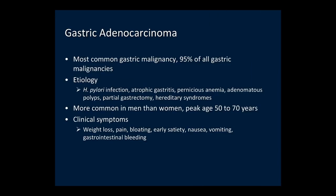Adenocarcinoma is the most common gastric malignancy, representing 95% of all gastric malignancies. The main etiology is thought to be chronic H. pylori infection. Patients with atrophic gastritis, pernicious anemia, adenomatous polyps, partial gastrectomy, and hereditary syndromes have an increased incidence. They are more common in men than women with a peak age between 50 and 70 years. Patients present with weight loss, pain, bloating, early satiety, nausea, vomiting, and/or gastrointestinal bleeding.